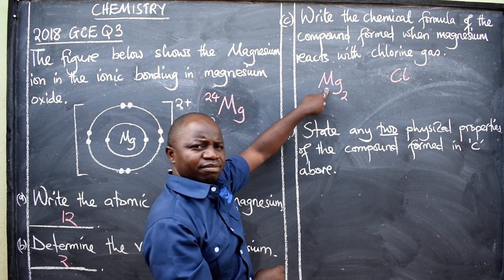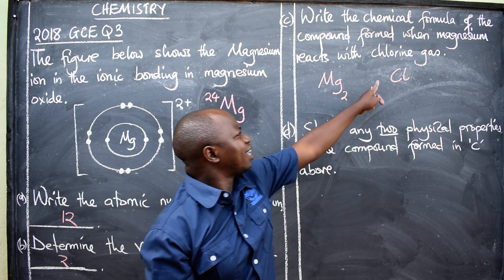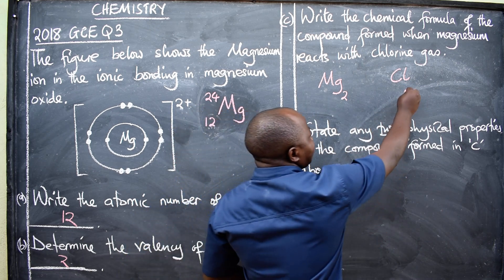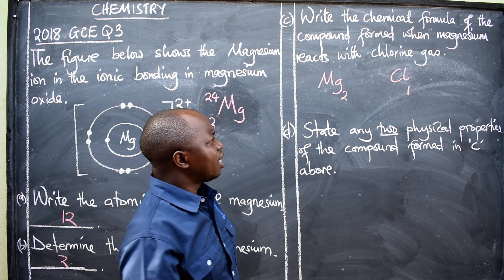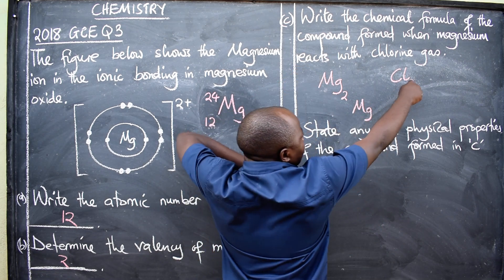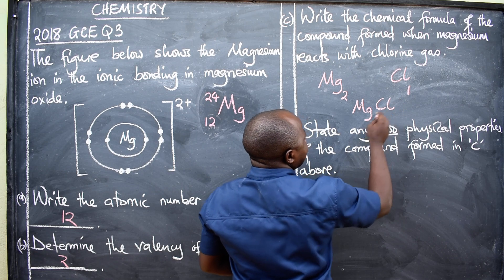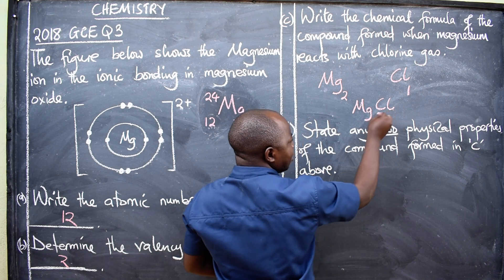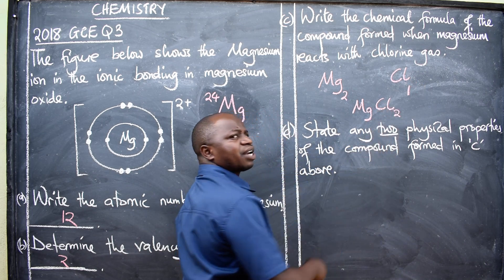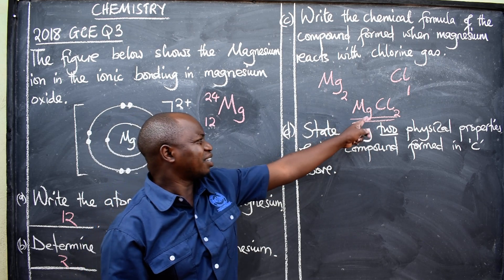Magnesium's valence is 2. Chlorine is in Group 7, so its valence is 8 minus 7, which gives 1. To write the chemical formula, you swap their valences. The valence of magnesium (2) becomes the subscript for chlorine, and the valence of chlorine (1) becomes the subscript for magnesium. Since chlorine's subscript is 1, we don't write it. So the correct formula is MgCl₂ — magnesium chloride.